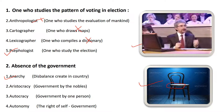The first one-word substitution is: one who studies the pattern of voting in elections. It means a person who judges or studies the pattern of voting. The options are: anthropologist — one who studies the evolution of mankind; cartographer — one who does maps; lexicographer — one who compiles a dictionary; and psephologist — one who studies elections. Psephologist is the right answer.